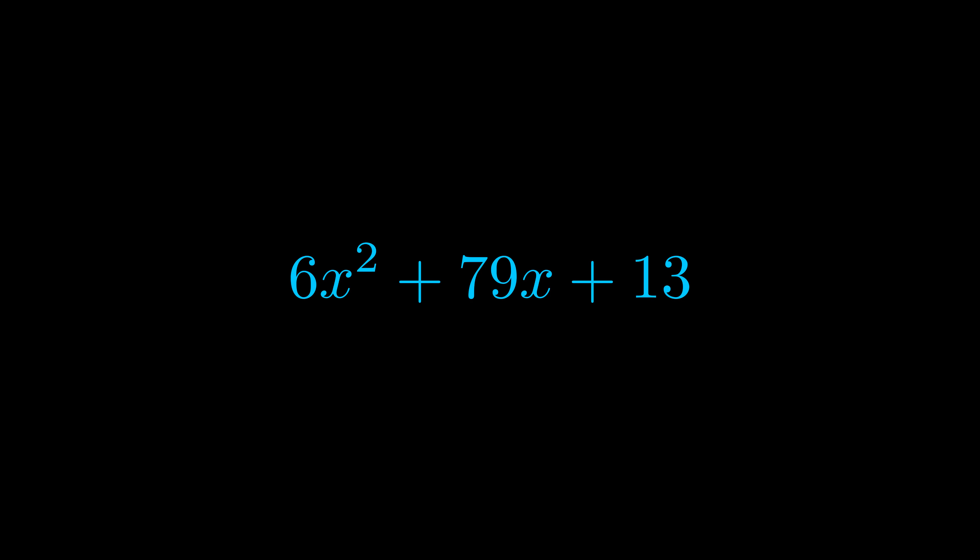Here we can see that our a value is the coefficient on the x squared term and our c value is the constant term. When we multiply these two values we get this value here in magenta.